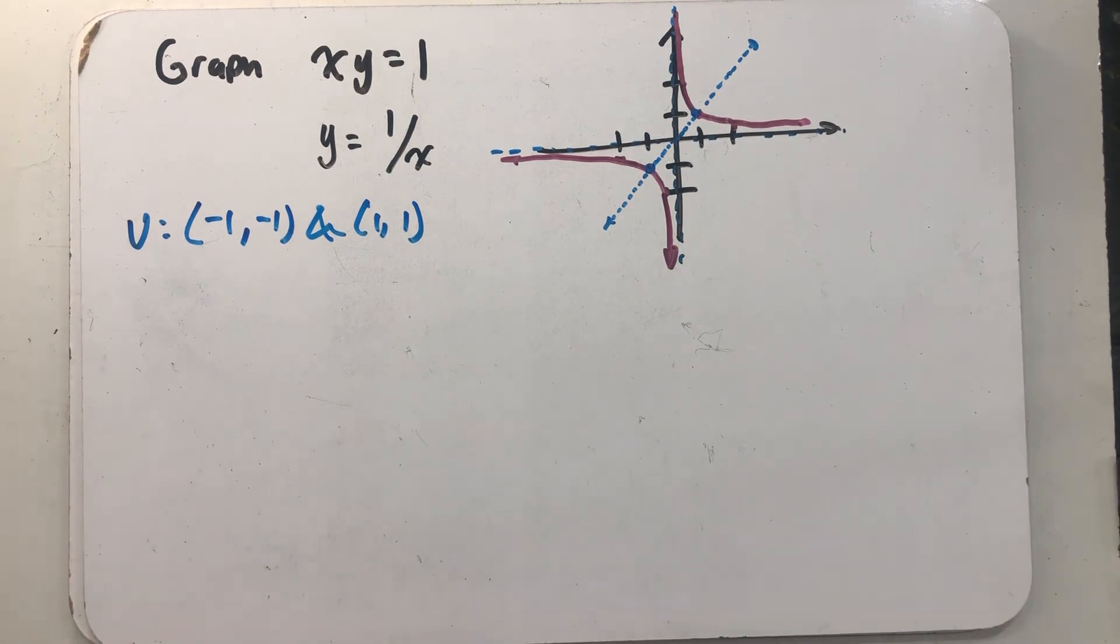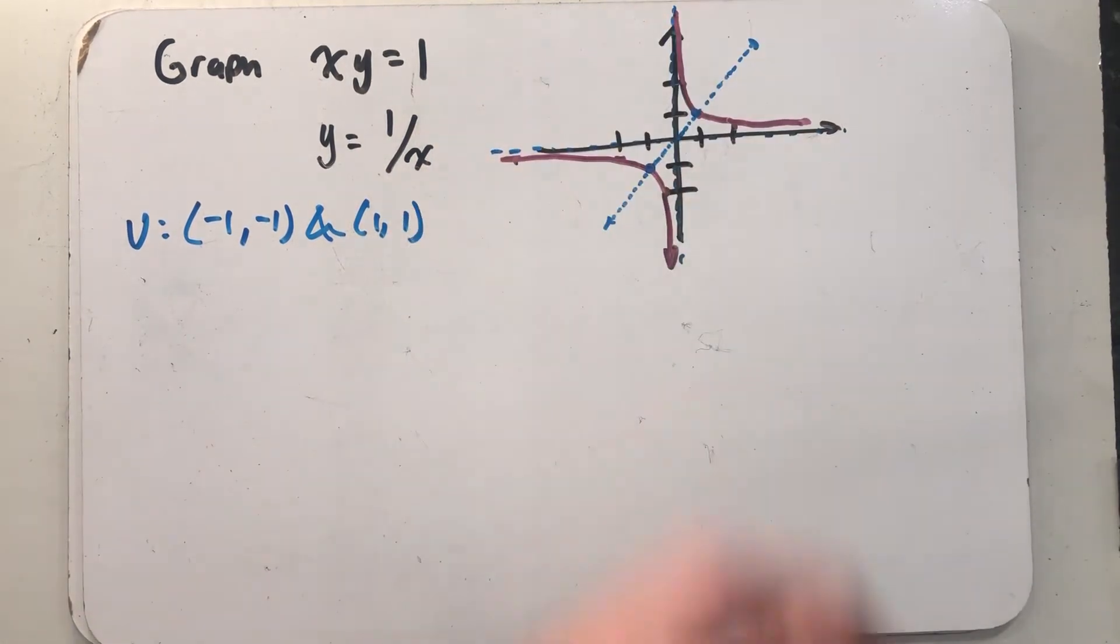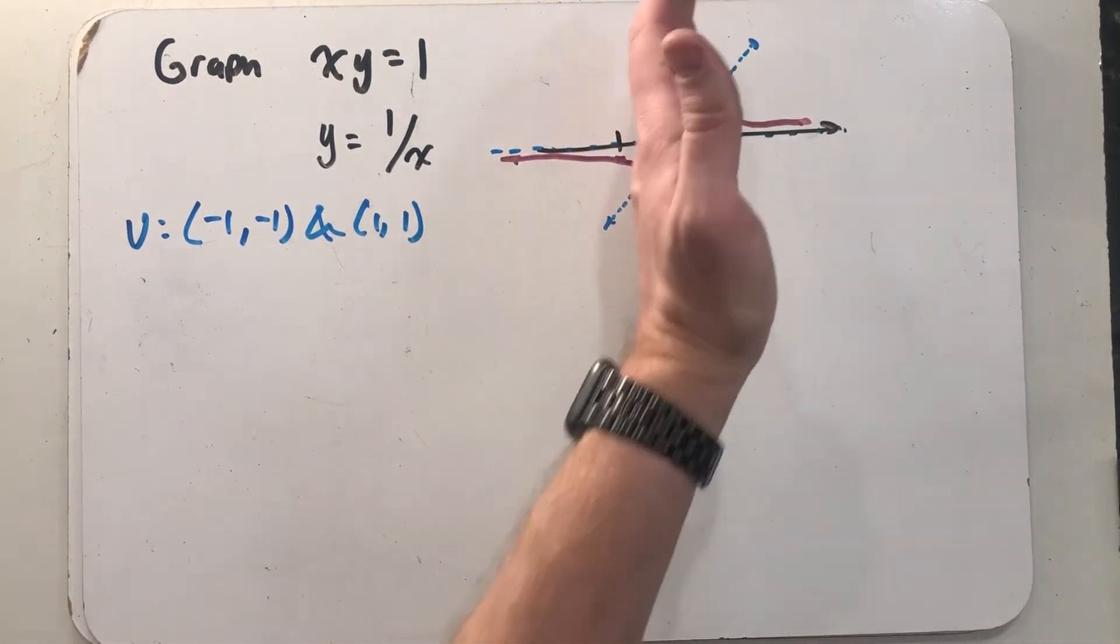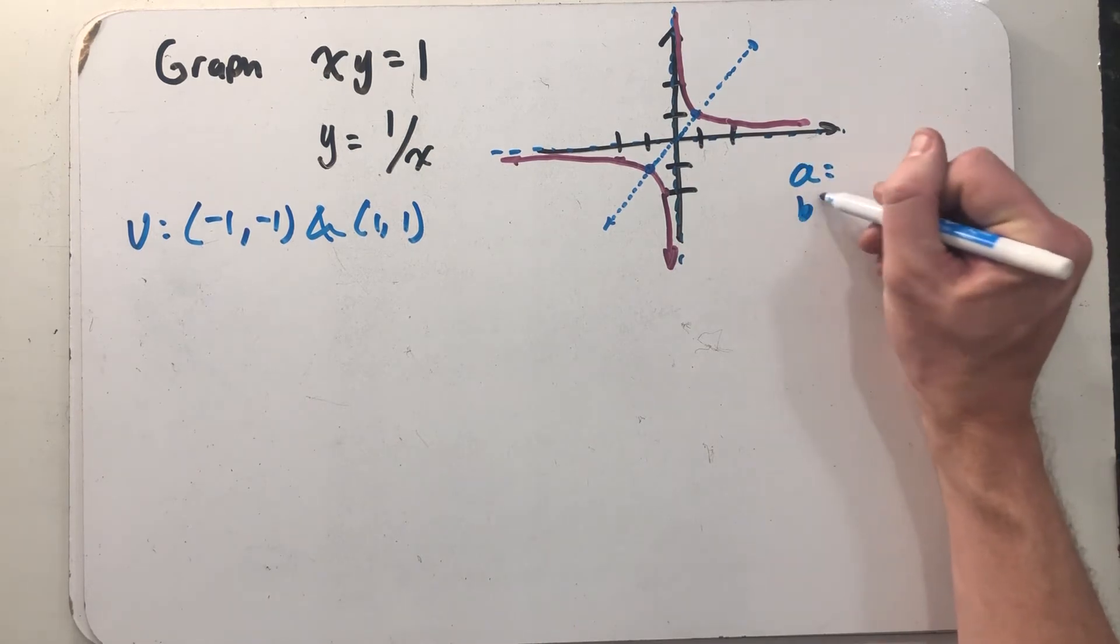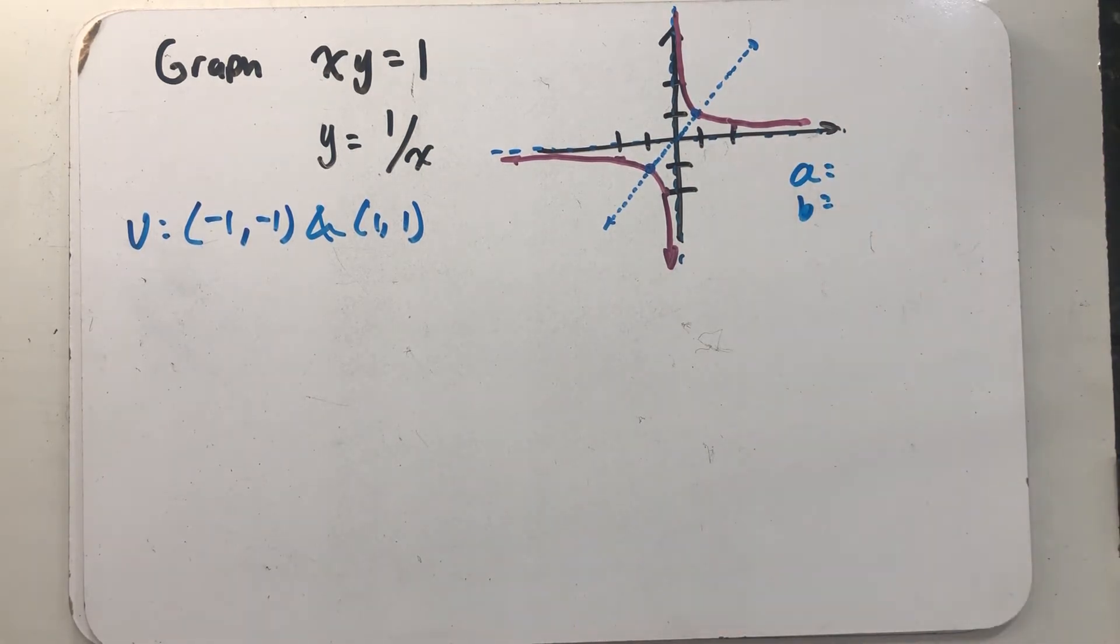And then I see the asymptotes right there on the axes. In fact, those asymptotes are kind of special for the hyperbola because they meet at a right angle. If we think about that, that actually means the values of a and b, if we were thinking about drawing the central rectangle, would have to be the same thing.